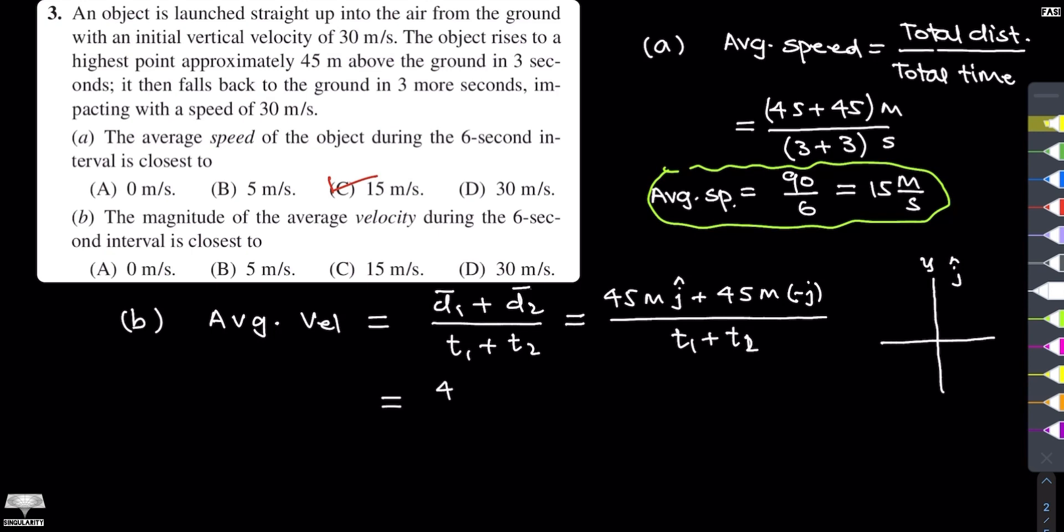And this will be 45 meter j unit vector minus 45 meters j unit vector divided by t1 plus t2, and this is 0 because the numerator is 0. So the average velocity is 0, which means that option A is the answer for part B. It should have been very obvious to you because when the object returns to the same place, the total displacement is 0, and the average velocity is also 0.